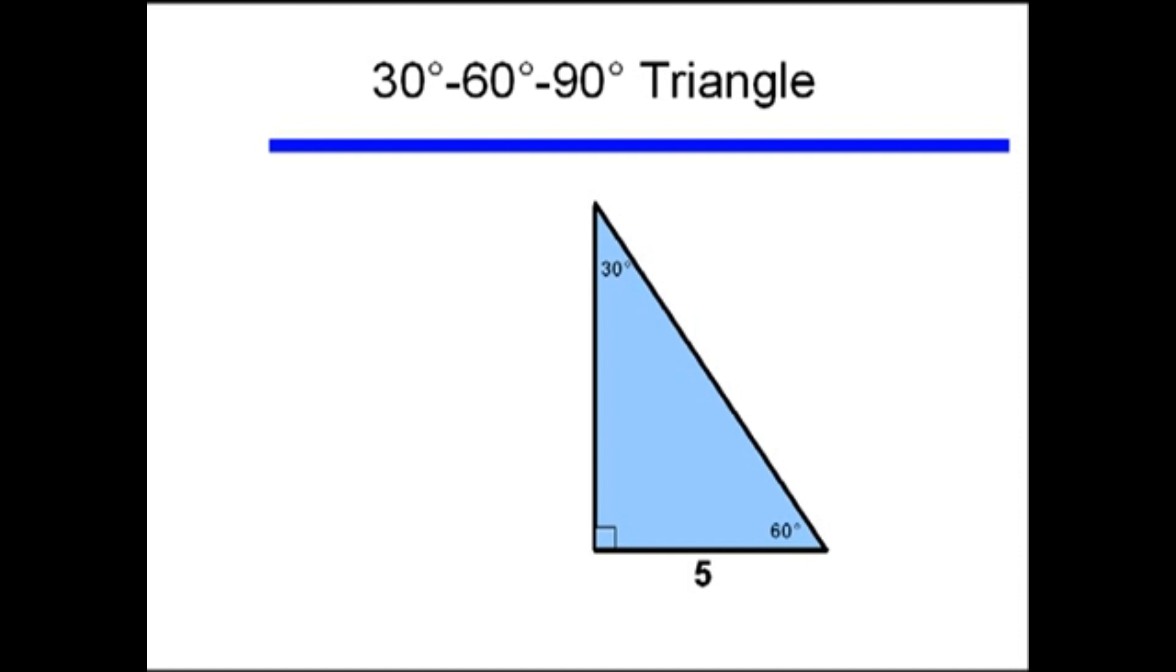So if I had a length 1 before, and now it is length 5, I'm going to multiply all three sides by 5. So the hypotenuse used to be length 2, and now 2 times 5, it is now length 10. Similarly, the other leg was square root of 3, and it is now 5 square root of 3.